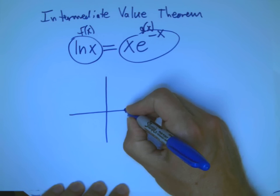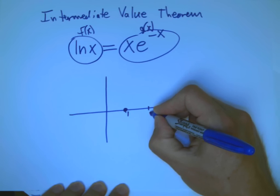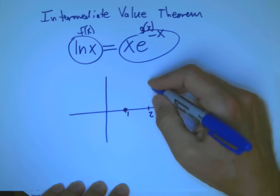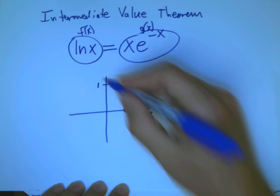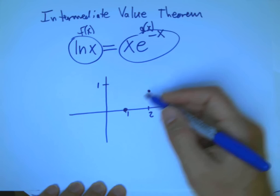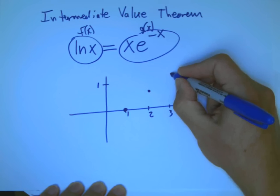Well, ln of 1 is 0. And ln of 2 turns out to be about 0.7. And so let's say that's right about here. So let's say that's 1 on the vertical scale.